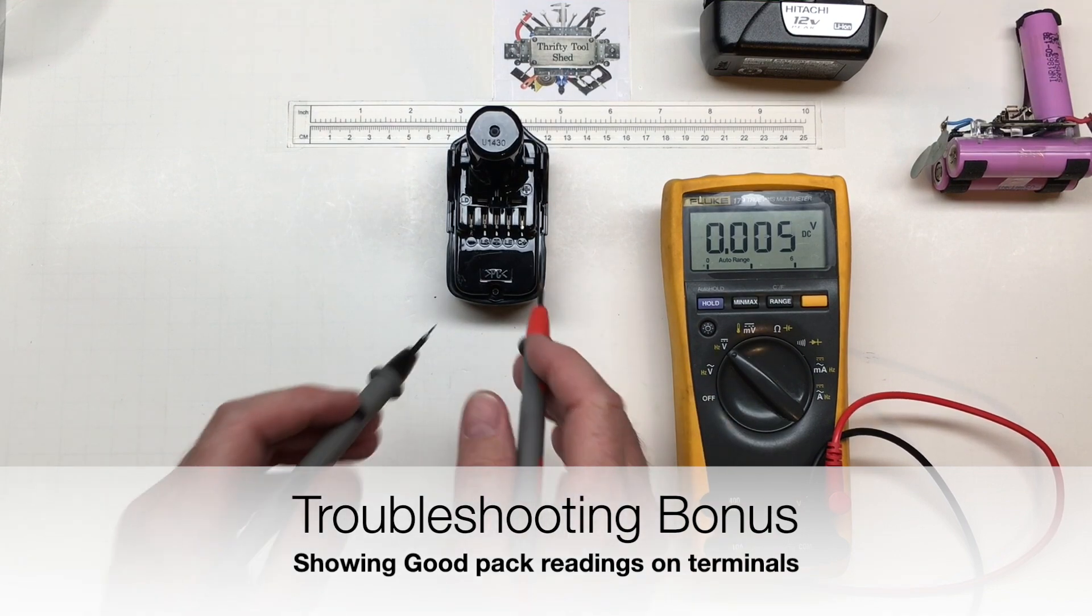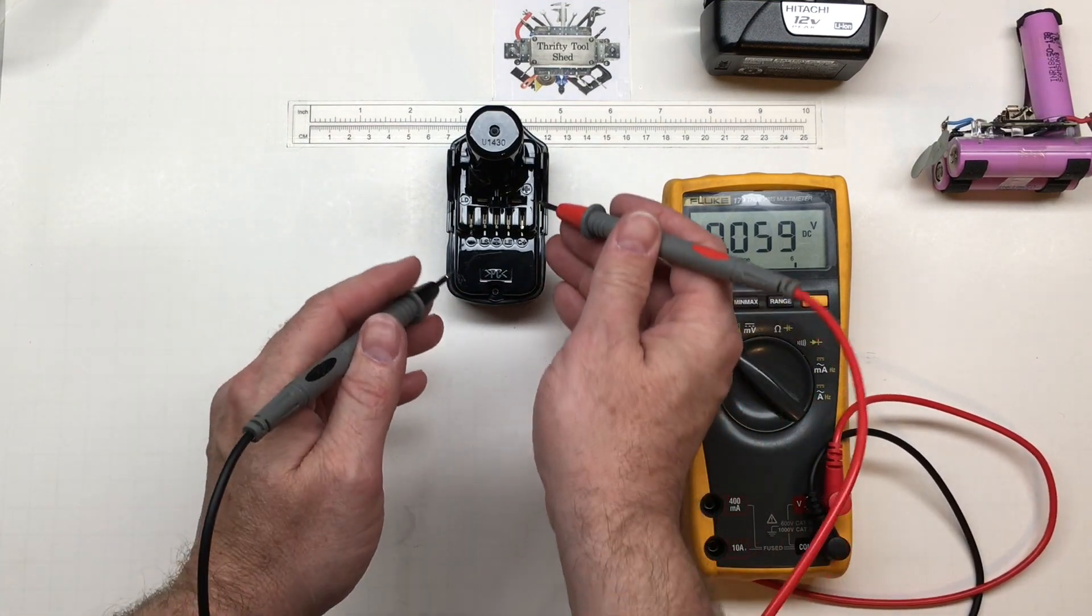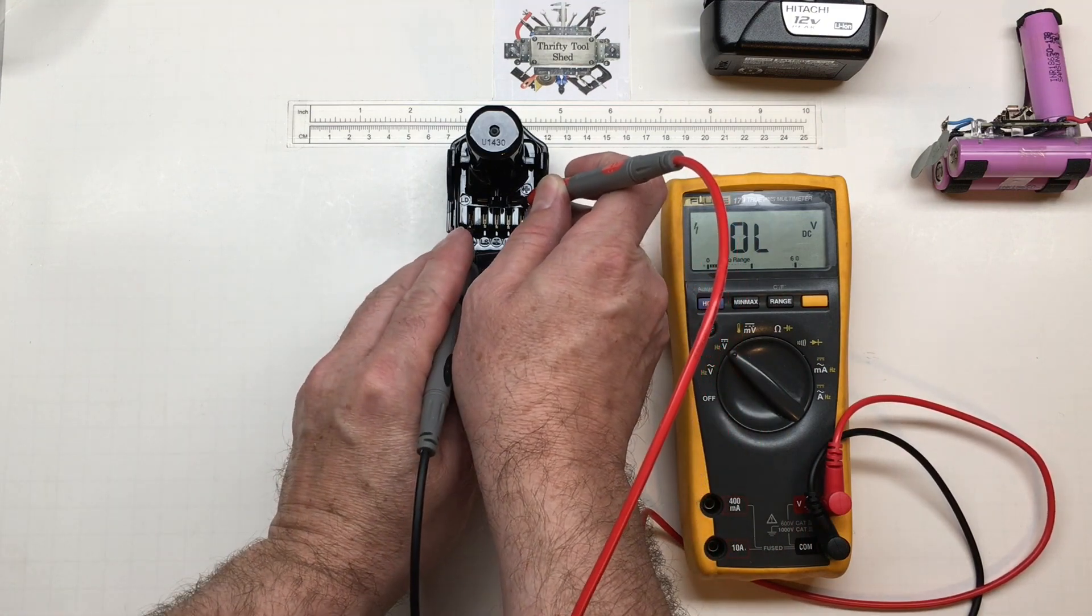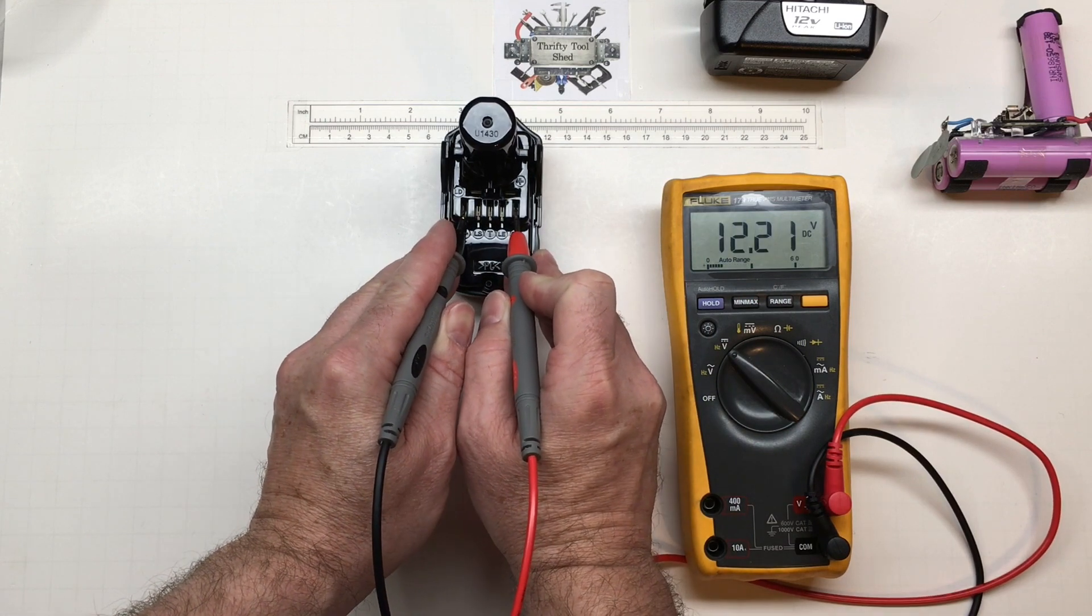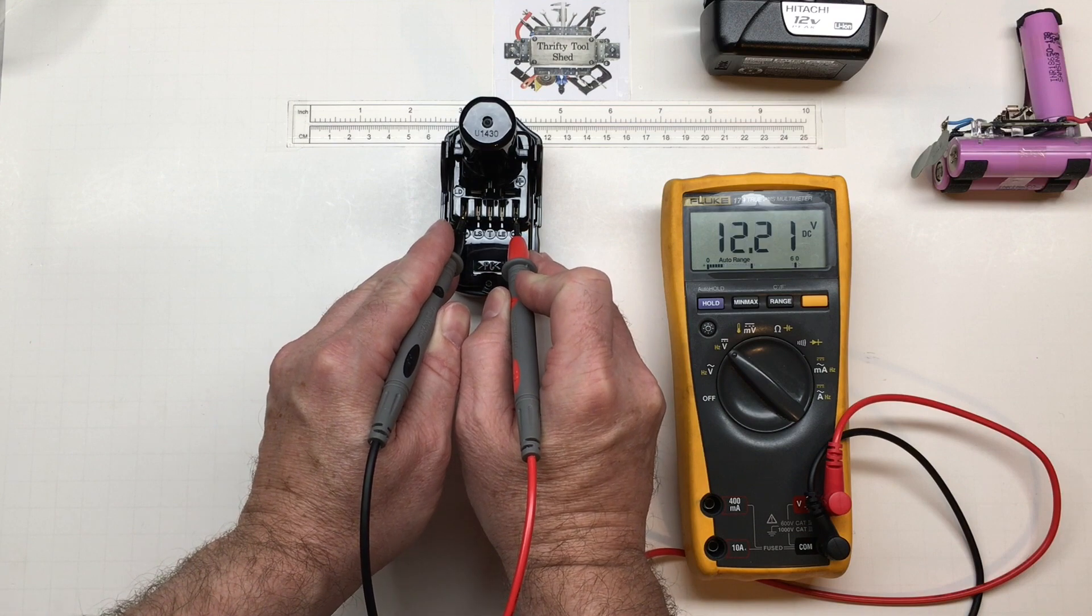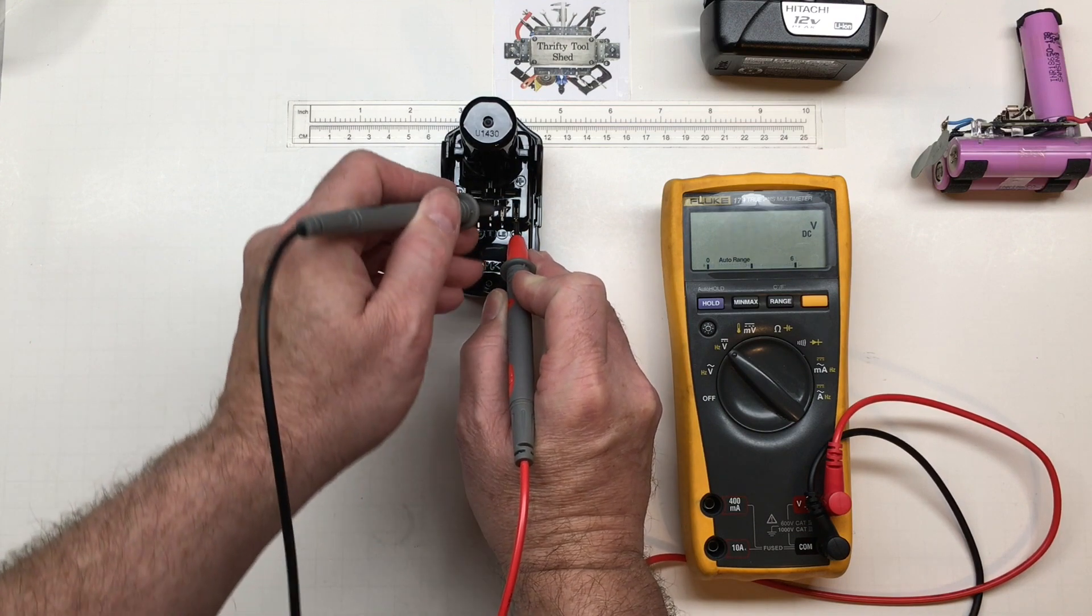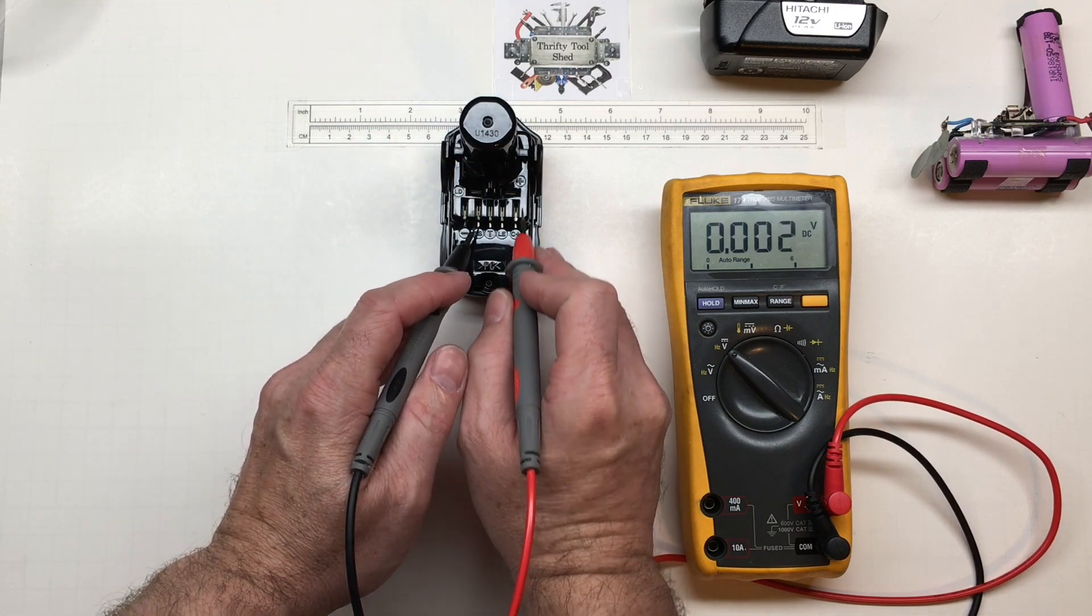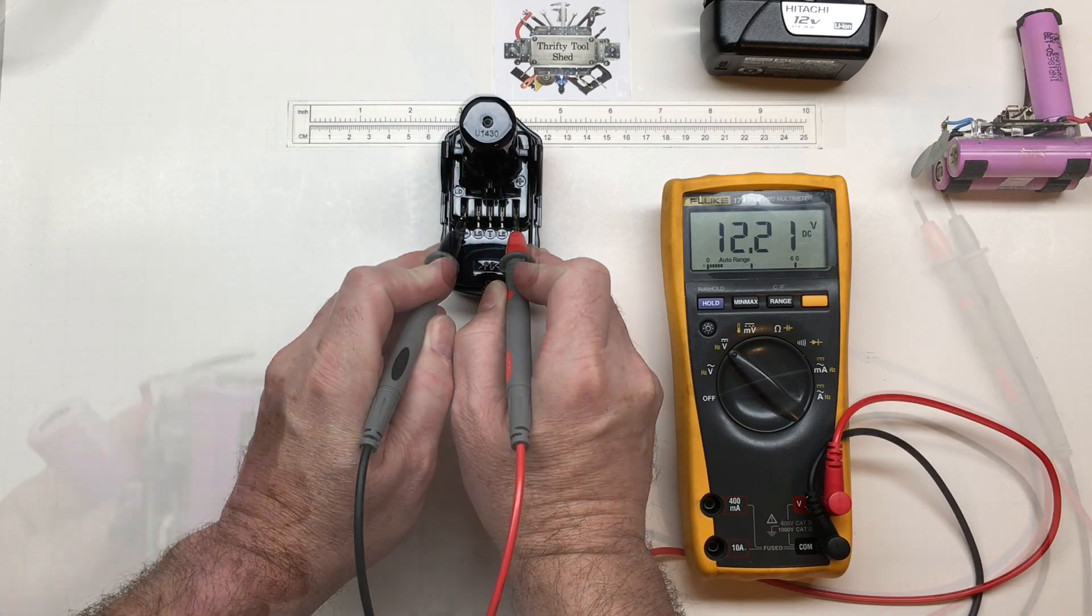So just in case you're troubleshooting a pack and this helps you, I'll show this on the video. I just tested out the plus and the minus. The C plus here seems to also be connected through the plus, whether it's through a low ohm resistor or something or diode is hard to tell, but I'm getting basically the same reading. So if you're trying to check a pack, C plus is basically measuring the same as plus back to my negative.